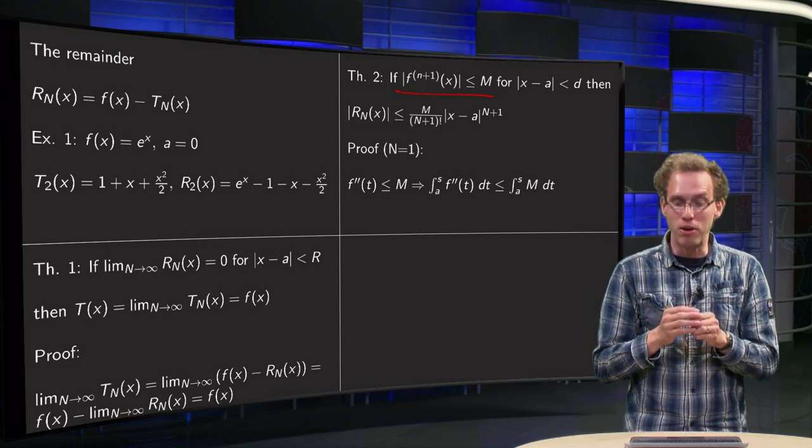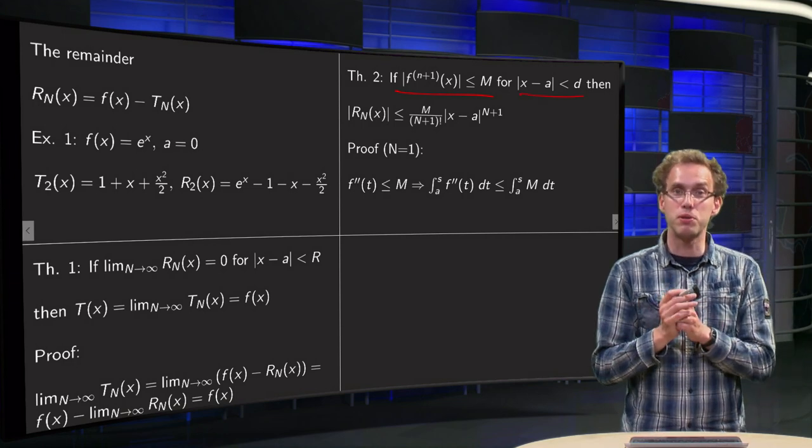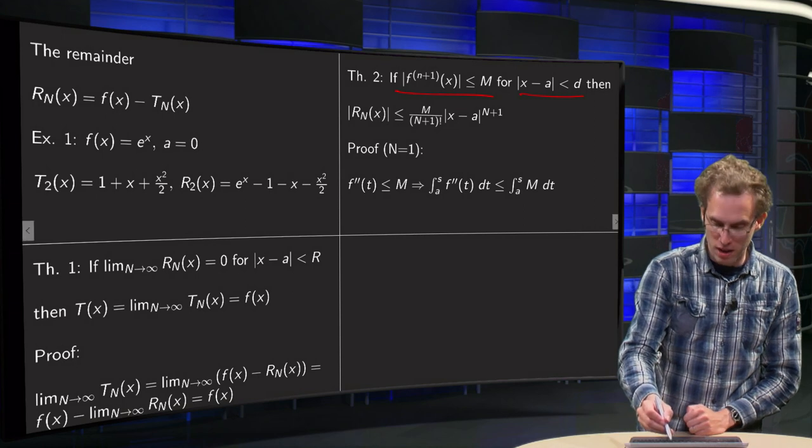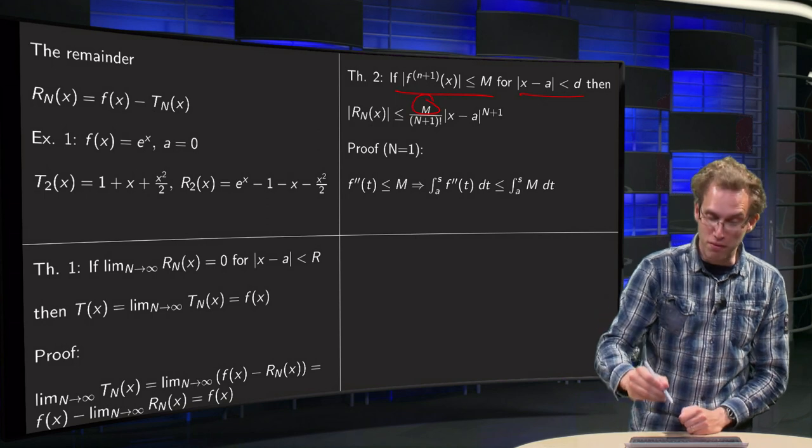So you have to know somehow that your function is not behaving too erratically, the n-th derivative has to be bounded by some value capital M in the prescribed domain.